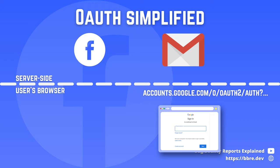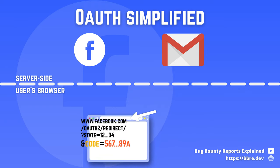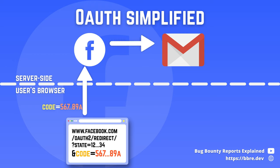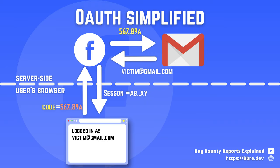Then in Gmail you have to login, but usually you are already logged in, so you only choose the account. If you only have one account, Gmail will just flash in front of you and you will be redirected back to Facebook. The parameters, among others, will contain the code. Importantly, up until now, Facebook and Gmail servers did not communicate with each other. Only now, when Facebook receives the code, it sends the request to Gmail server and gives you back the session token if it's valid.